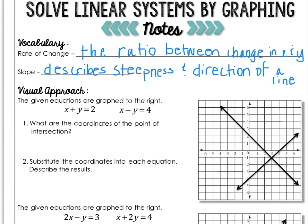Let's look at visually what that means first. If you're given these two equations — X plus Y equals 2, and X minus Y equals 4 — they've been graphed for you. I'm going to highlight X plus Y equals 2; that's this line right here. And X minus Y equals 4; that's this line right here.